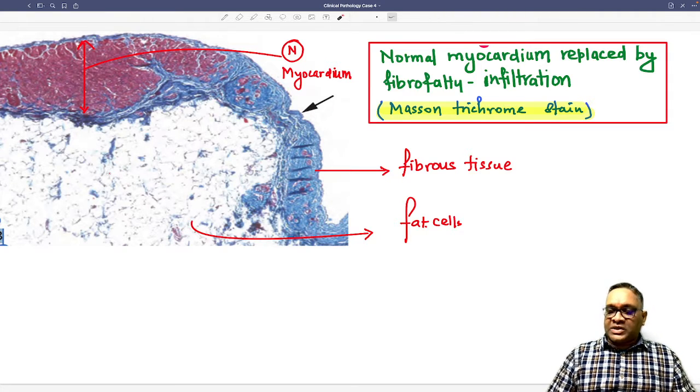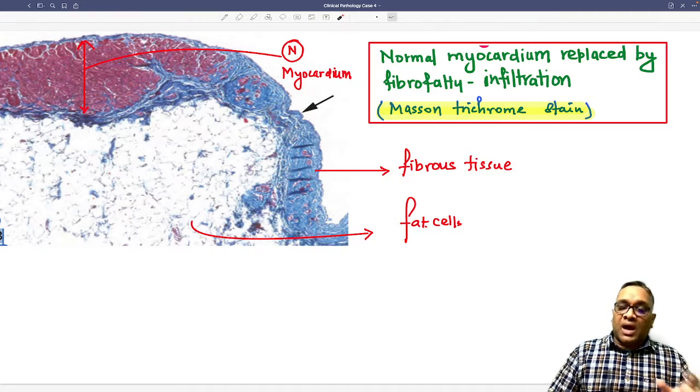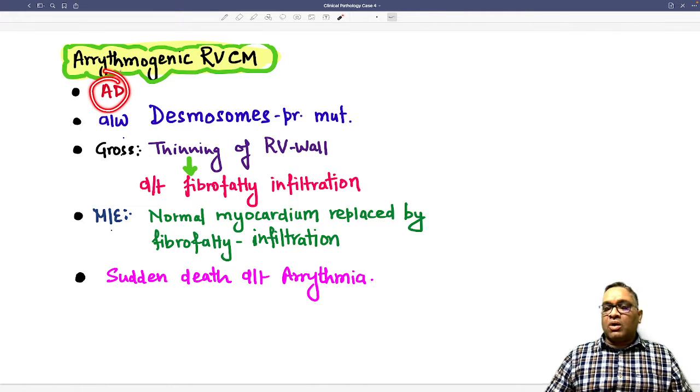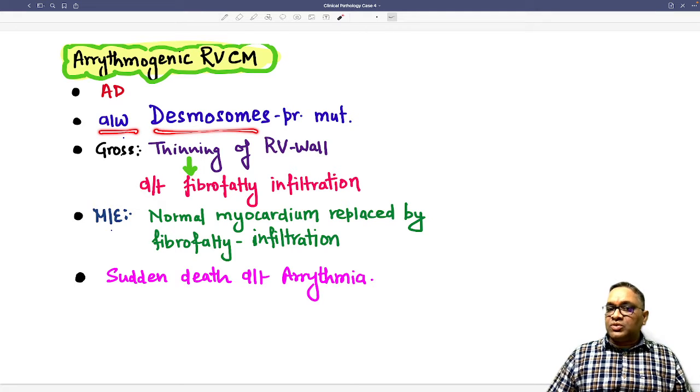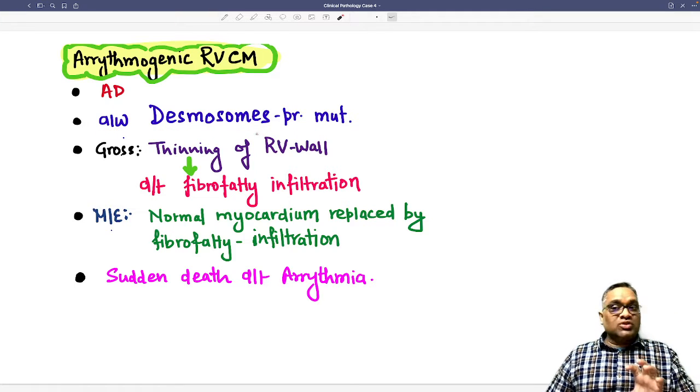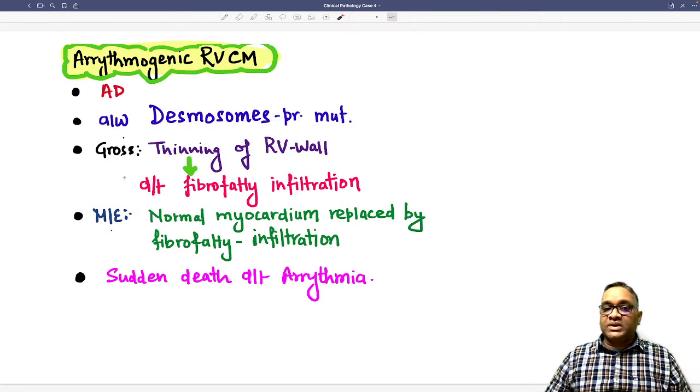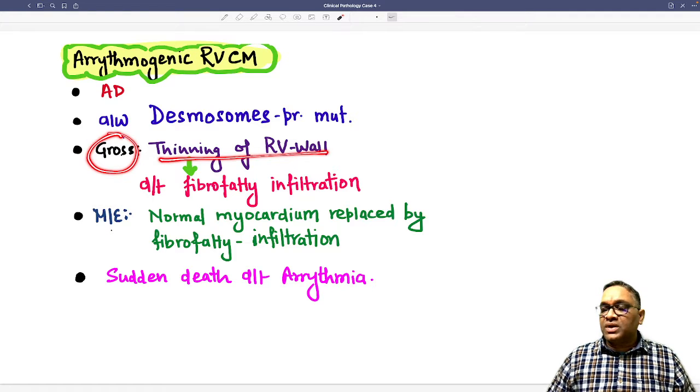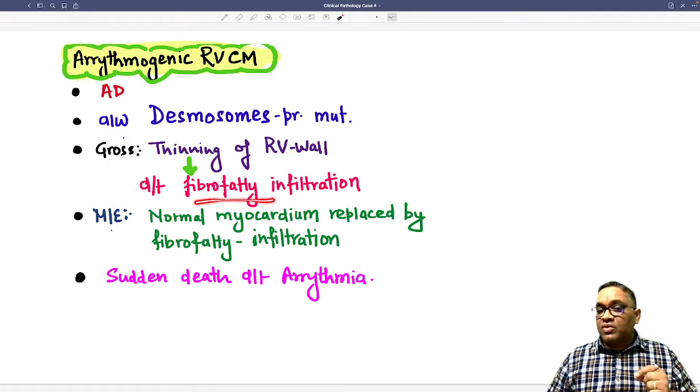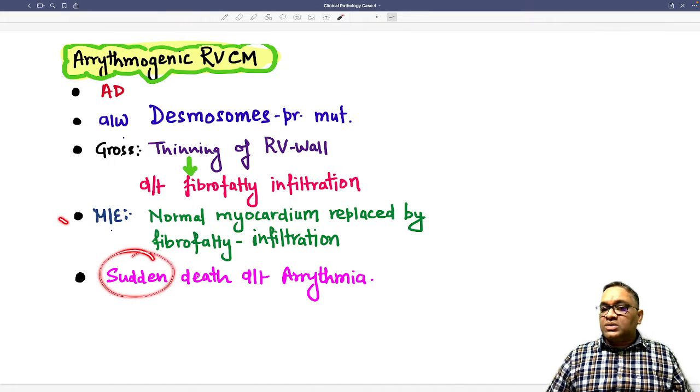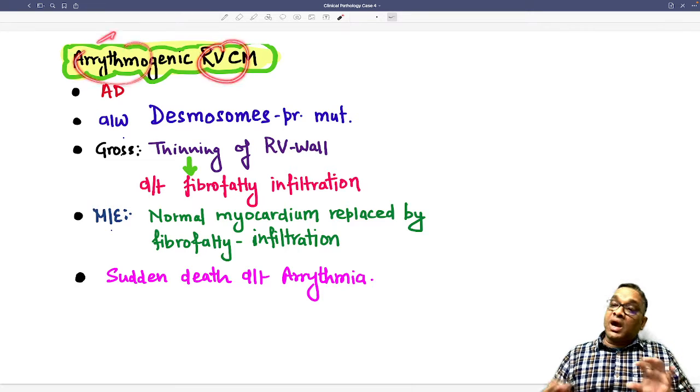This is how we are seeing a picture of arrhythmogenic right ventricular cardiomyopathy. Usually it is an autosomal dominant condition and they are associated with desmosome protein mutation. On gross examination, I have shown you thinning of the right ventricular wall because of the fibro-fatty infiltration. On microscopic examination, same thing we have seen—normal myocardium was replaced by fibro-fatty tissue. This patient will have sudden death because of arrhythmia, that is why it is called arrhythmogenic right ventricular cardiomyopathy.